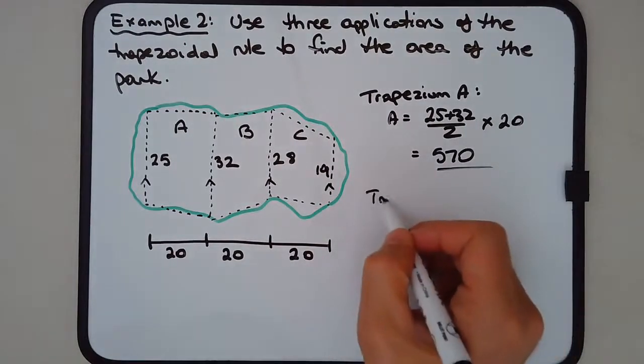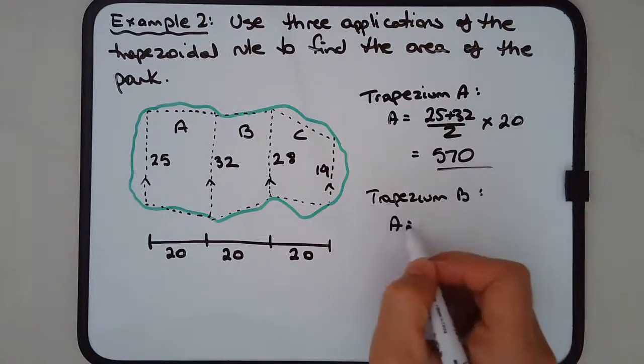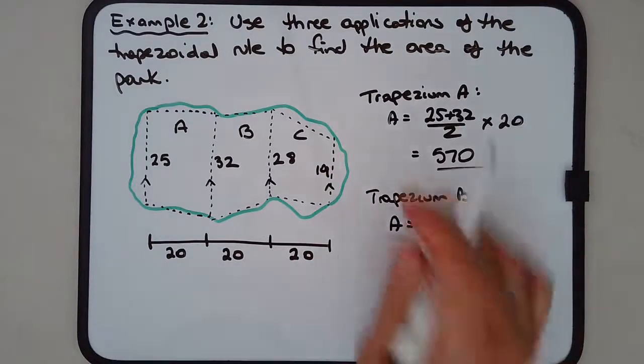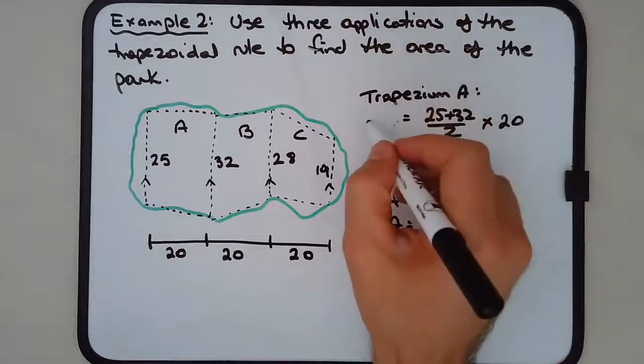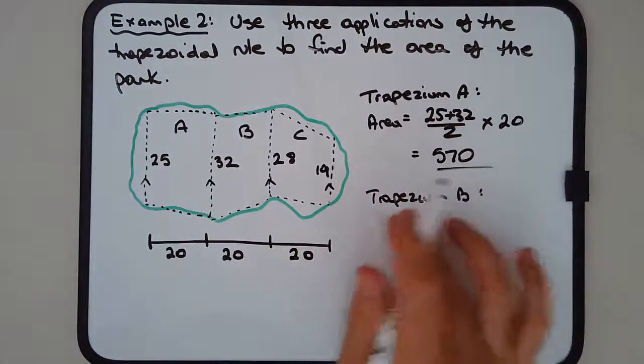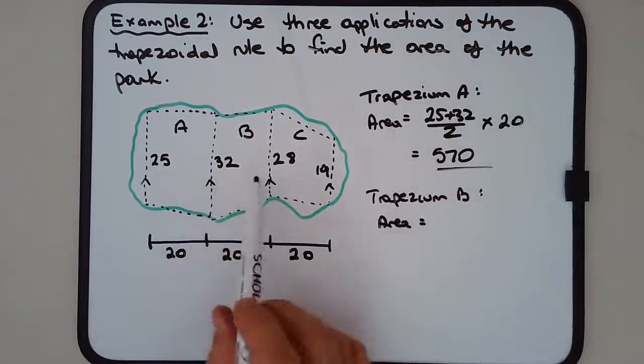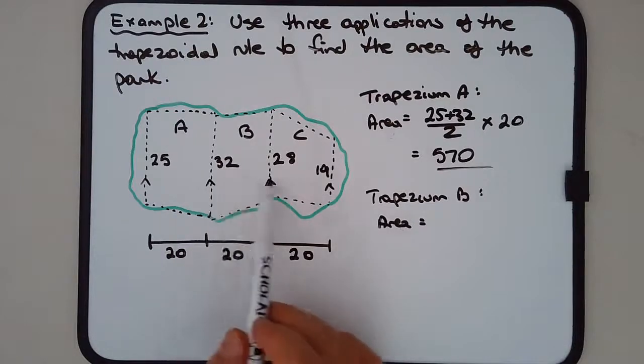Trapezium B: area equals - I might just write 'area' so we're not confused with the A for trapezium A and the A for area. So area equals the average or mean of the parallel lines. We've got 32 and 28, so it's important that we focus on this trapezium in the middle.